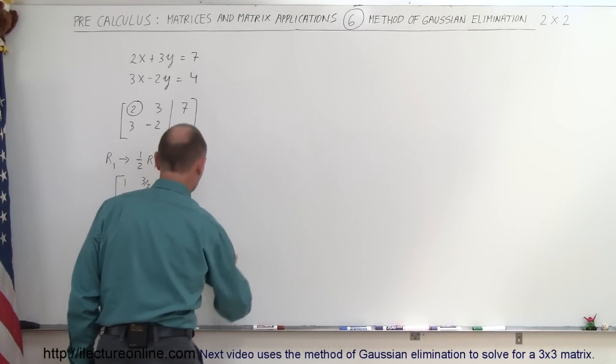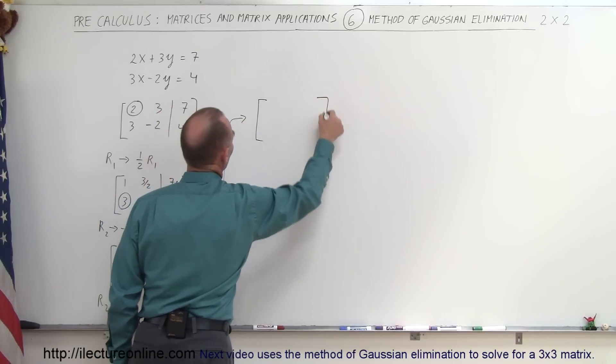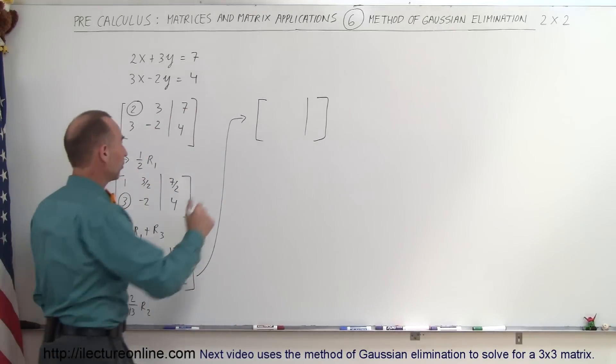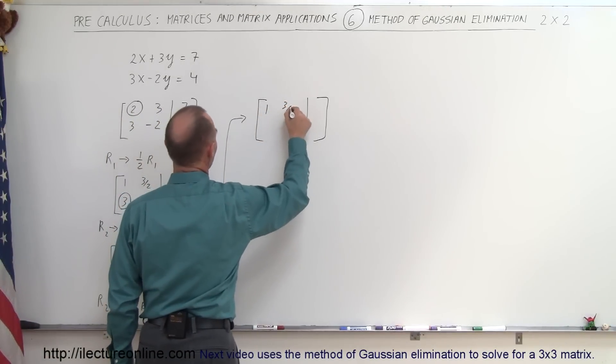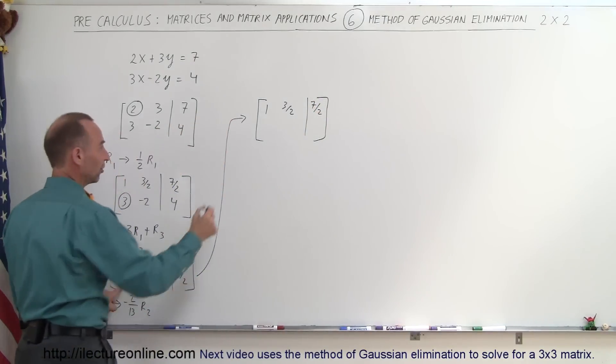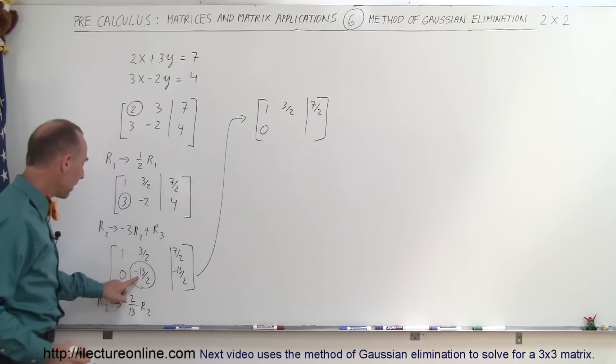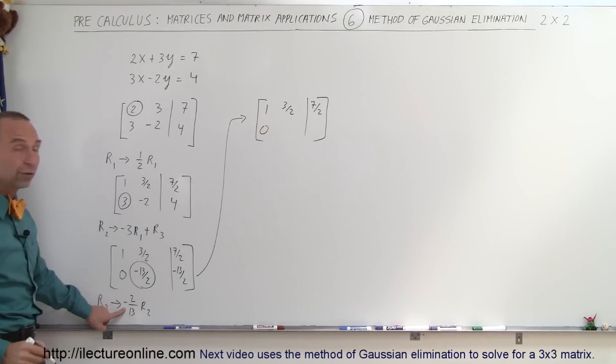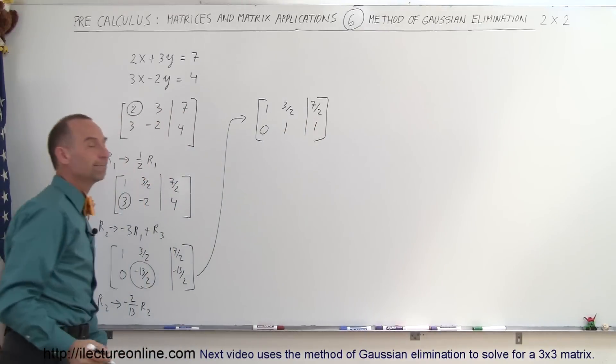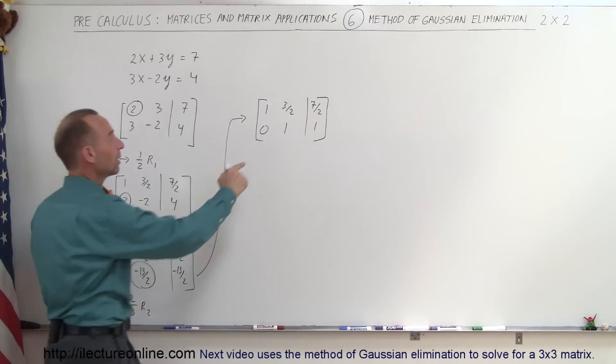Let's go ahead and do that. My matrix becomes the following matrix. Notice that the first row will not change. I'm not meddling with the first row, so I get a 1, a 3 halves, and a 7 halves. Here I already have a 0. Multiplying minus 13 over 2 by minus 2 over 13 turns that into a 1 and does the same to that number over there.